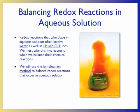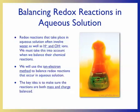One method that easily takes this into account is the ion-electron method. The ion-electron method does two things. First, it makes sure that when we balance our reaction, it is mass balanced — we want the same number of each type of atom on both sides of the equation. A new concept introduced for redox reactions is that the equation must also be charge balanced, meaning the net charge on both sides of the equation is equal.